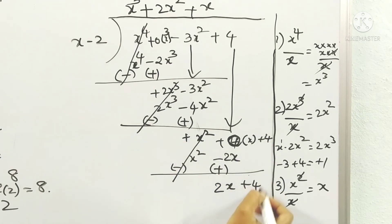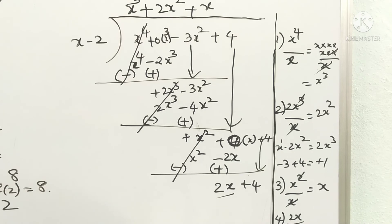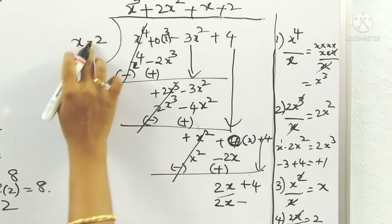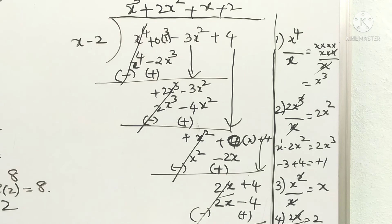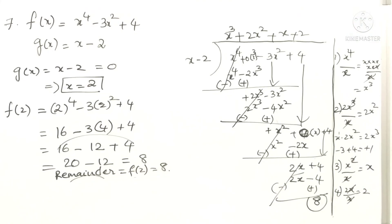Now 2x divided by x = 2, so write plus 2 in the quotient. Multiply: x into 2 = 2x, and minus 2 into 2 = minus 4. Change the signs and subtract — the 2x terms cancel, and plus 4 plus 4 gives 8. So the remainder is 8, which matches the Remainder Theorem result. Verified!